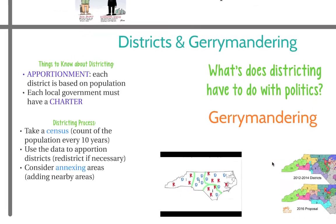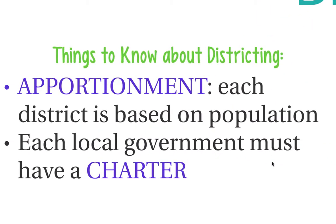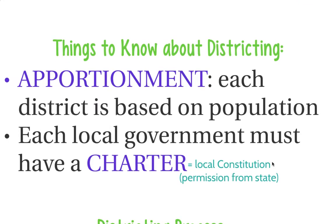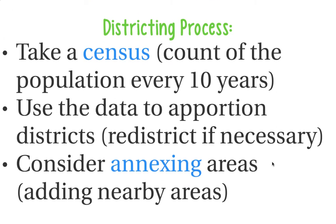Then you've got districts and gerrymandering. Each district is based on the population of the district, and that is known as apportionment. As districts grow or shrink, representatives are added or taken away. Every 10 years, the United States counts everyone in the country — that is known as a census. They use the data to apportion the districts, so they redistrict if necessary.